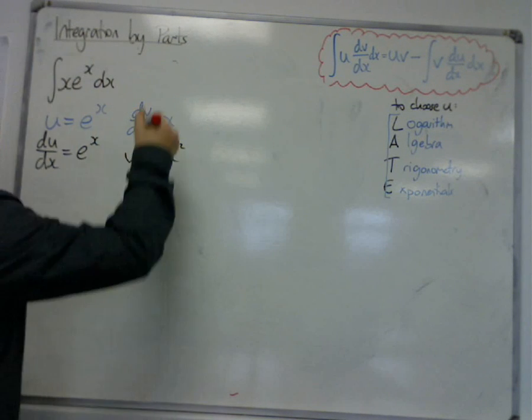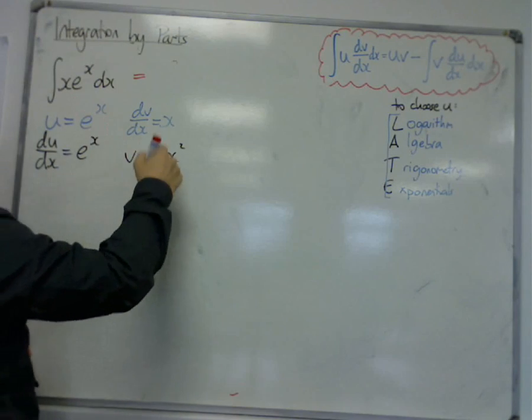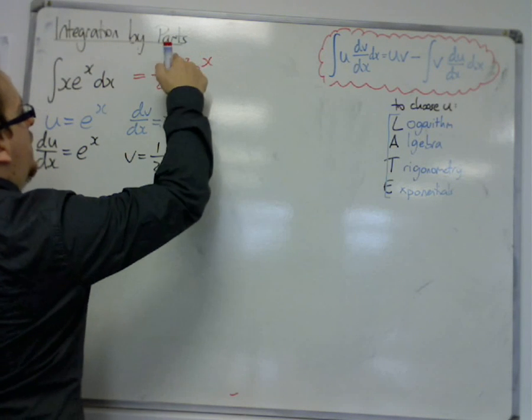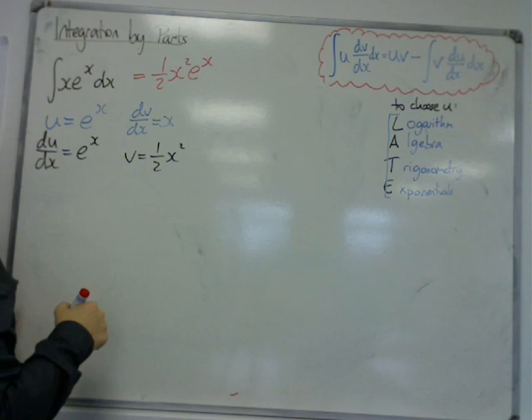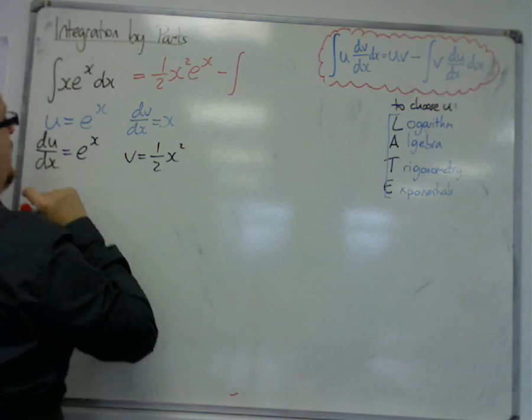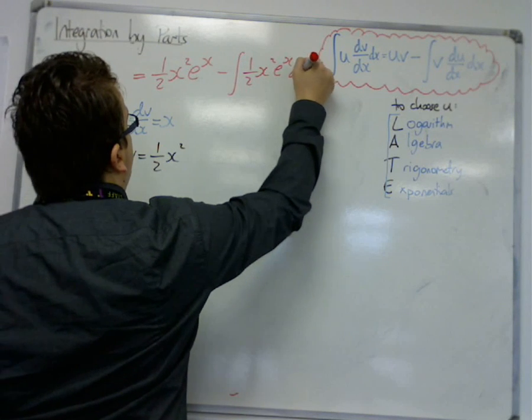So then I put them into my formula, so I get u times v is one half x squared e to the x. That seems perfectly reasonable. And then I'm going to take away the integral of v times du by dx. So that's one half x squared e to the x dx.